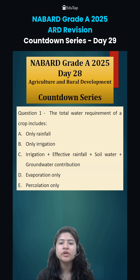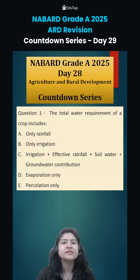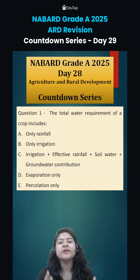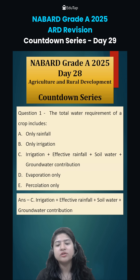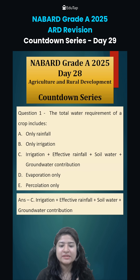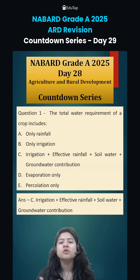Question number 1 was: the total water requirement of a crop includes what? Basically, throughout the life cycle of a crop, at different stages it requires water. The total requirement includes whatever irrigation facility you are providing, the rainfall happening in that particular area, how much moisture is present in the soil, and also groundwater contribution — for example, if there is a nearby pond, that is also contributing to the total water requirement.